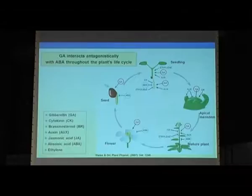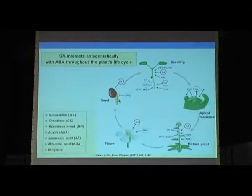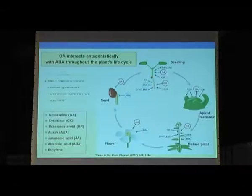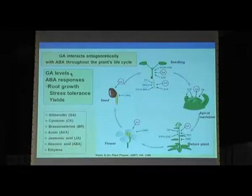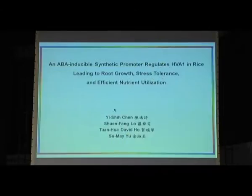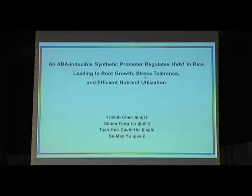Among many hormones that control plant growth, GA always interacts antagonistically with ABA throughout the entire plant life cycle — they always antagonize each other at different stages. Today I will introduce our strategy to control GA level or ABA response, which will control rice growth, stress tolerance, and yield. The first example is an ABA-inducible synthetic promoter that regulates HVA1 in rice, leading to root growth, stress tolerance, and efficient nutrient utilization.